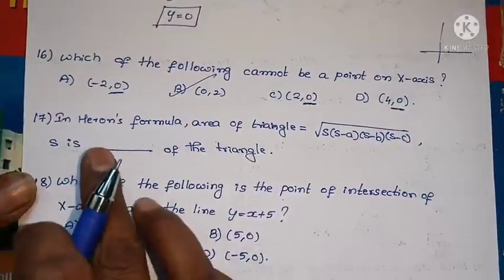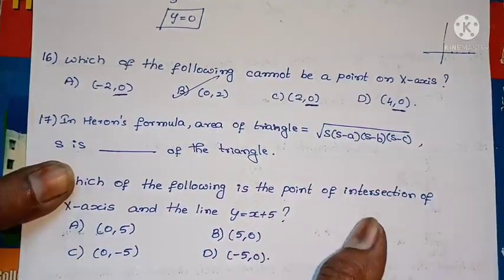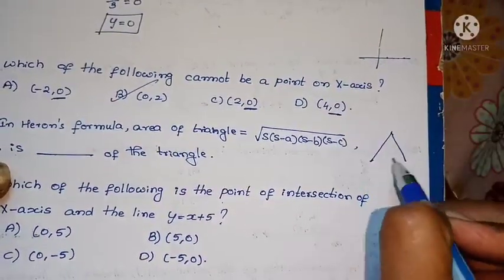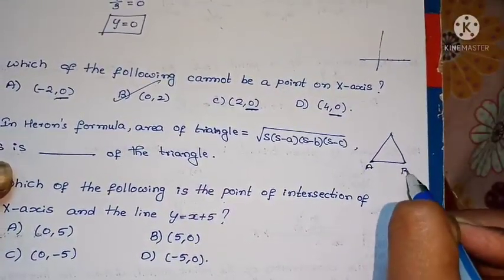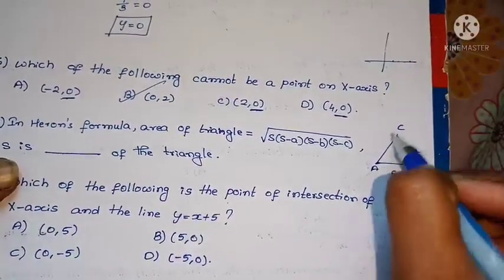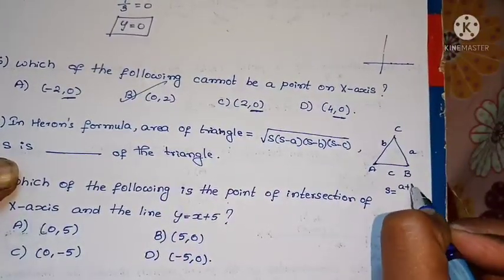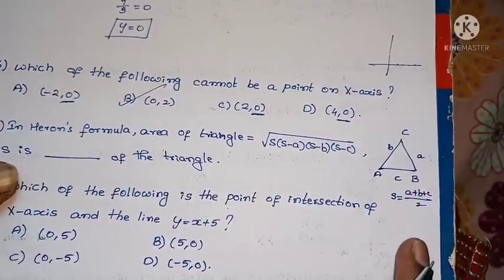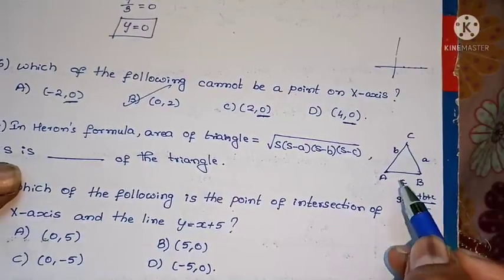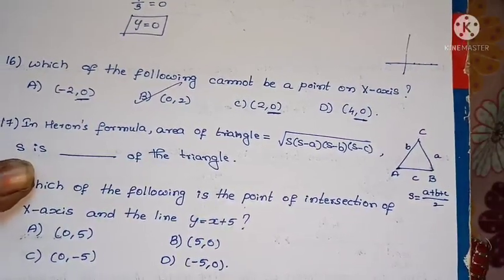Question 17: In Heron's formula, area of a triangle is root of s(s-a)(s-b)(s-c), then s is what? In this formula for area root of s, this is a triangle: capital A, capital B, capital C. Side AB is small c, side BC is small a, side AC is small b. Formula for s is (a+b+c)/2. This is a plus b plus c, which is the sides sum, that is the perimeter divided by 2. So s is half of the perimeter of the triangle.